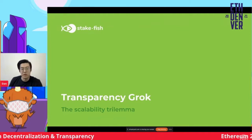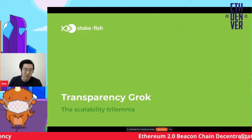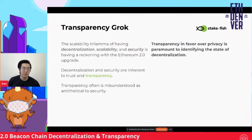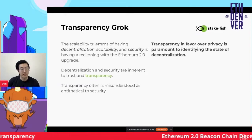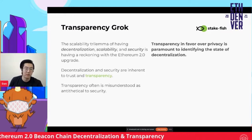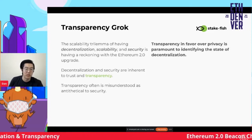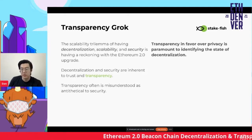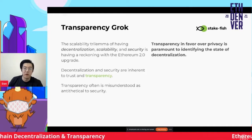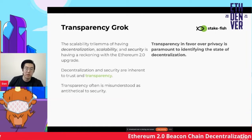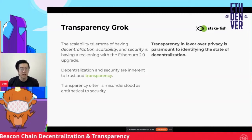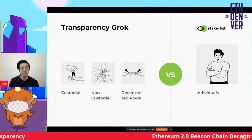This leads into the concept of transparency. The scalability trilemma is decentralization, security, and scalability — and these are all important, inherent concepts. Sometimes, the way people are familiar with exposing their validators — independent versus large service providers — is misunderstood as anti-private or anti-security. But to sum it up, transparency in favor over privacy is basically paramount to identifying the state of decentralization. The transparency we can see at least gives us a clear picture of state, and from that understanding we can act and see what we can do.